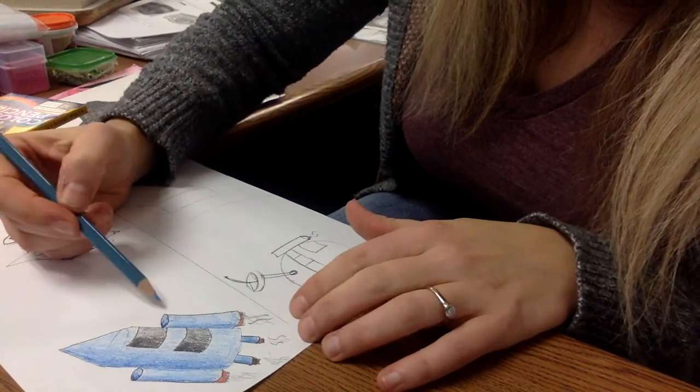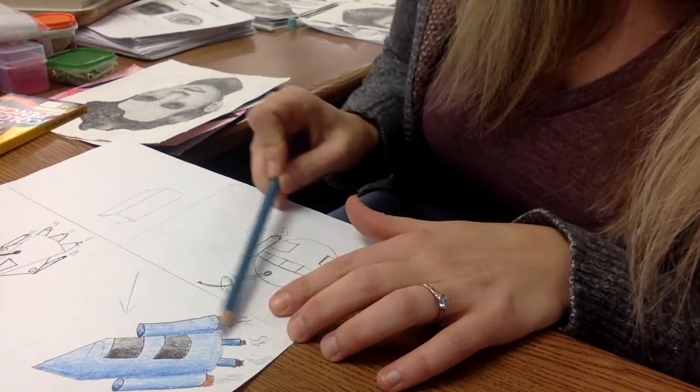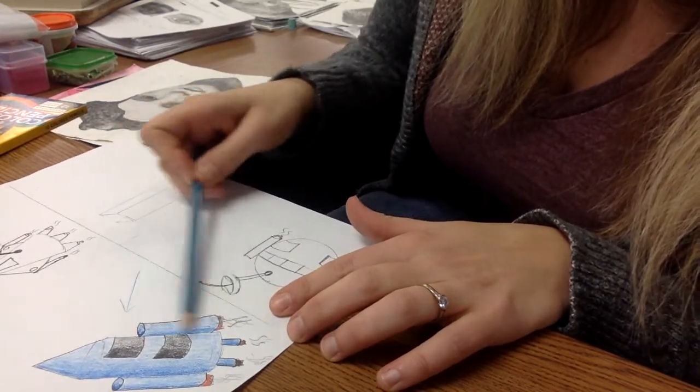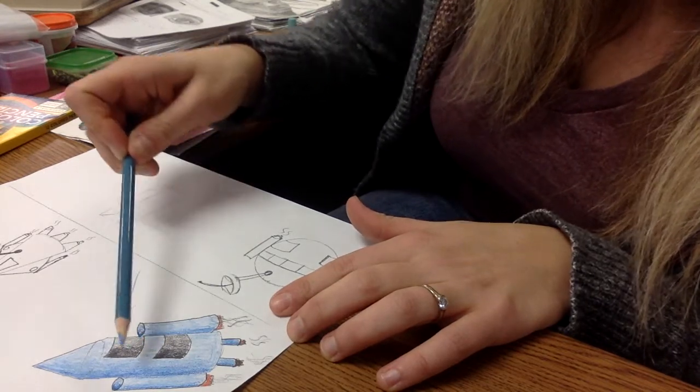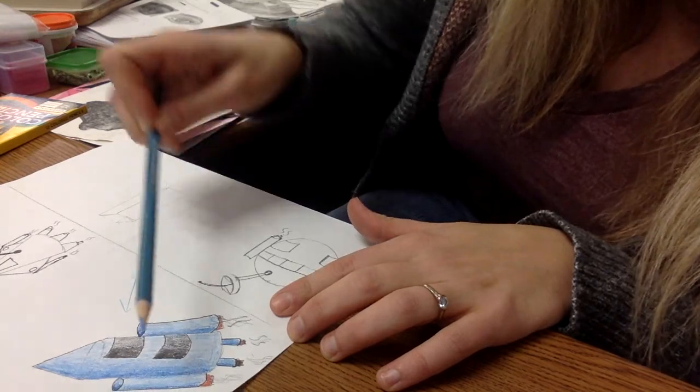For this person, they practiced this, their light source is coming in from this direction because this tube, this cylinder is light right here and it gets darker over here. This one gets lighter to darker. This one gets lighter to darker.